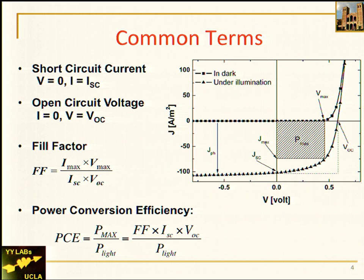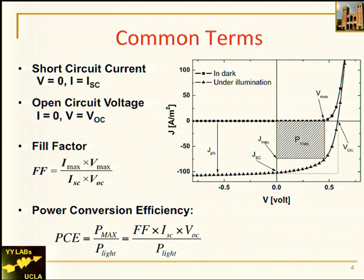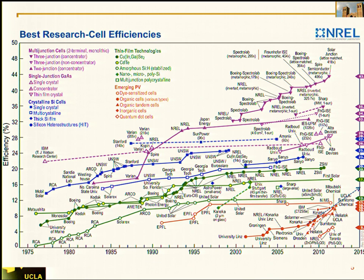There is a quantity called fill factor, which is the ratio of the maximum power rectangle versus the largest rectangle bounded by Jsc and Voc. The power conversion efficiency, PCE, is the maximum power divided by incident light intensity, which equals fill factor times Jsc times Voc.